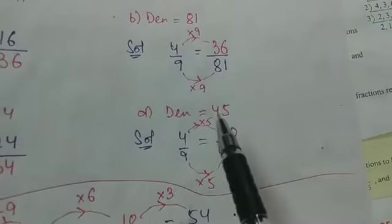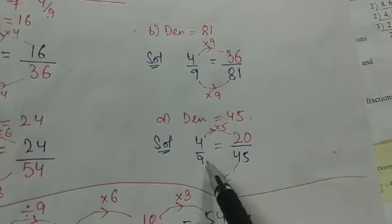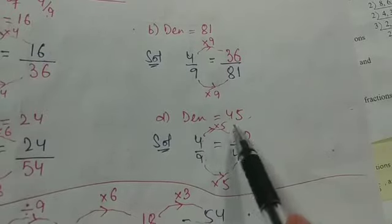And the final part is where the denominator should be 45. So it will be 9 times 5 are 45. So it will be 4 into 5, 20.